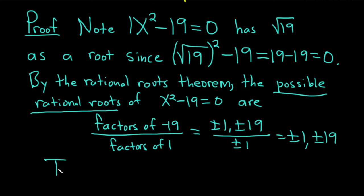So therefore, the square root of 19 is not rational. In other words, it is irrational.